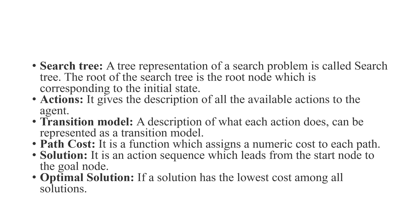Path cost is a function that assigns a numeric cost to each path. The search space contains all possible paths or solutions, and each path is given a numeric cost. A solution is an action sequence that leads from the start node to the goal node. If a solution has the lowest cost among all solutions, then that solution is called the optimal solution.